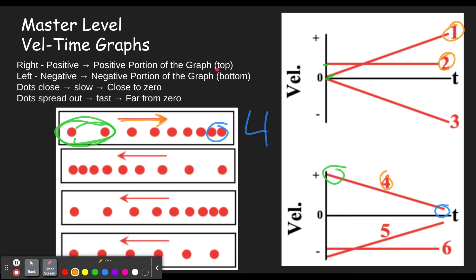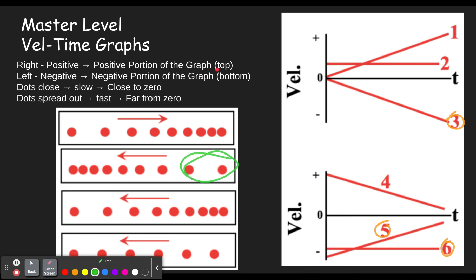Moving on to the next dot diagram, it is moving to the left, so we have graphs three, five, and six as choices — the negative ones. Remember, if it's moving left, the right-side dots happened first. This dot diagram started out moving fast — that looks like five or six. It ends up close together, meaning going slow, which means close to zero. Graph five ends up close to zero. So this would be five.